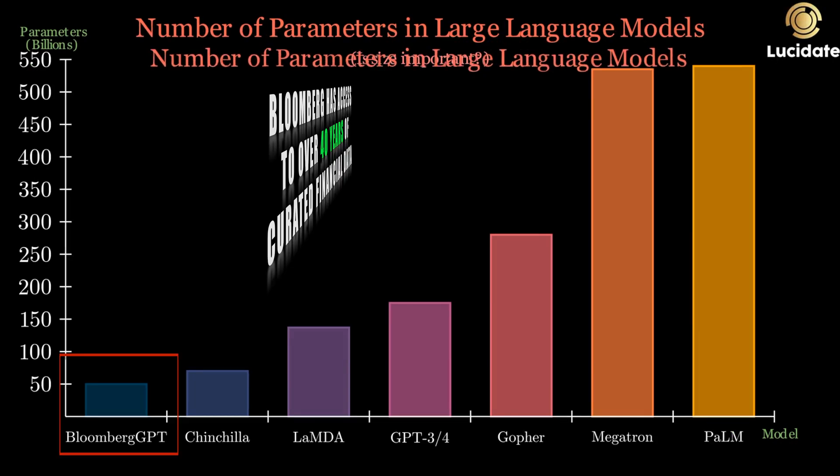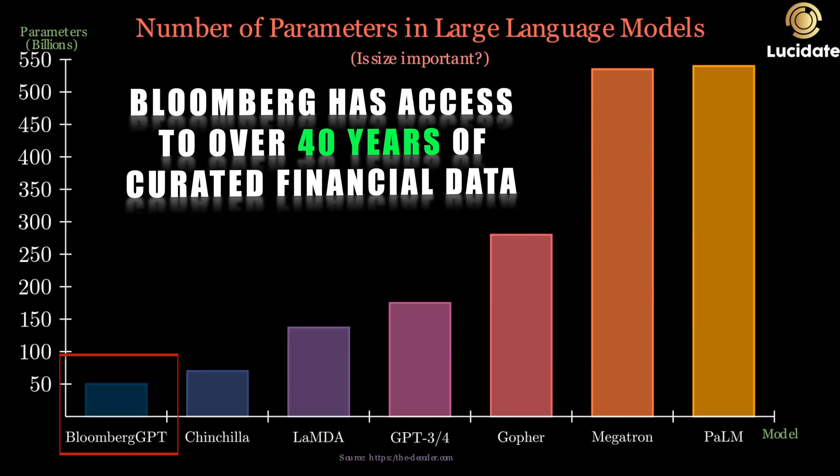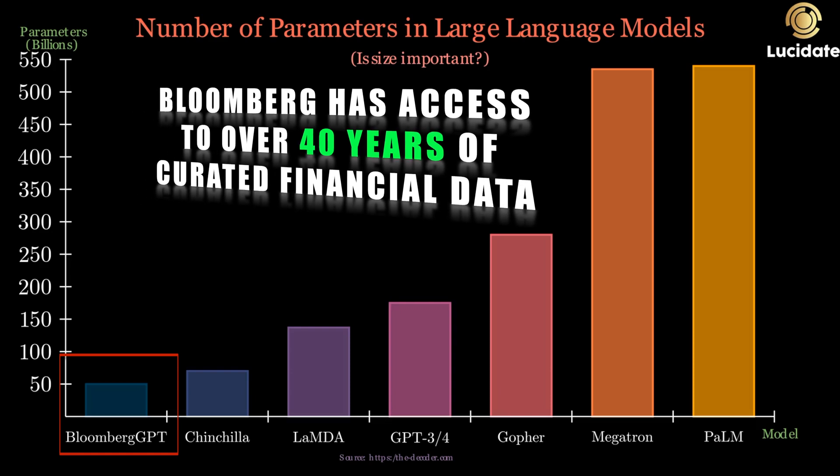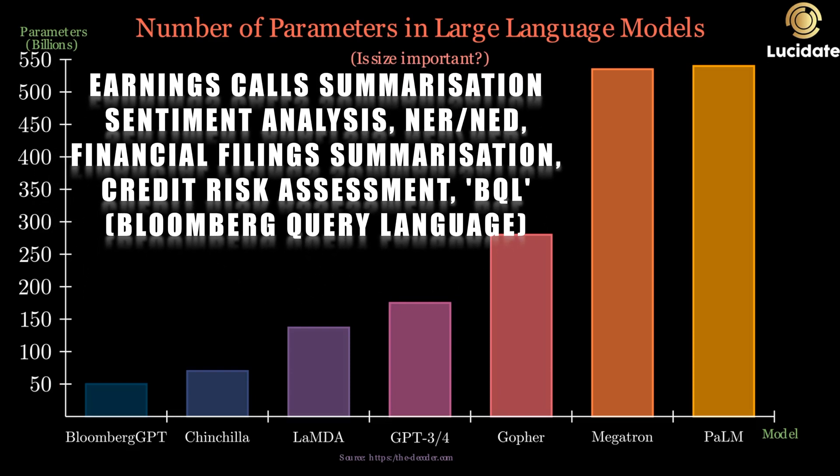As we know, Bloomberg GPT is a 50 billion parameter AI model specifically designed for the financial industry. This powerful language model has been trained on an extensive range of financial data, making it uniquely suited for various natural language processing tasks in capital markets. But how exactly did Bloomberg create this innovative model? Let's find out.